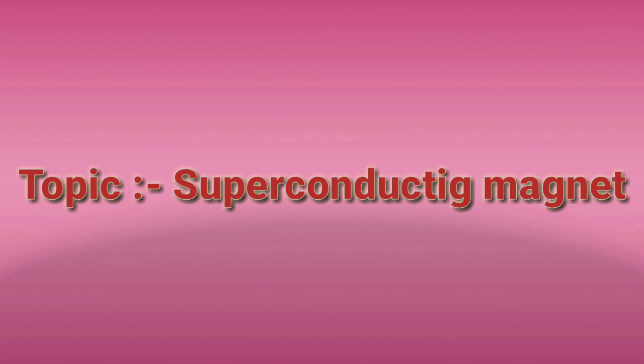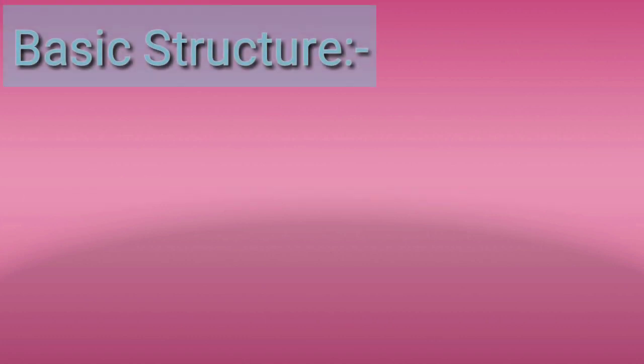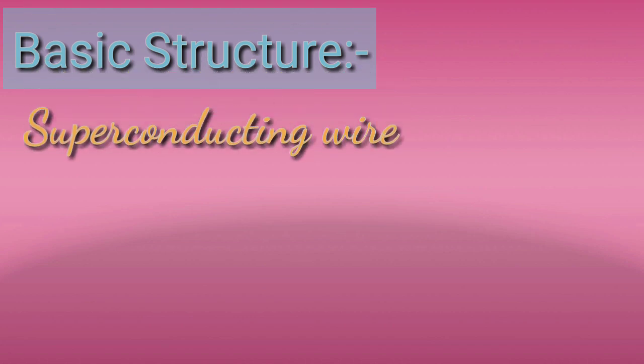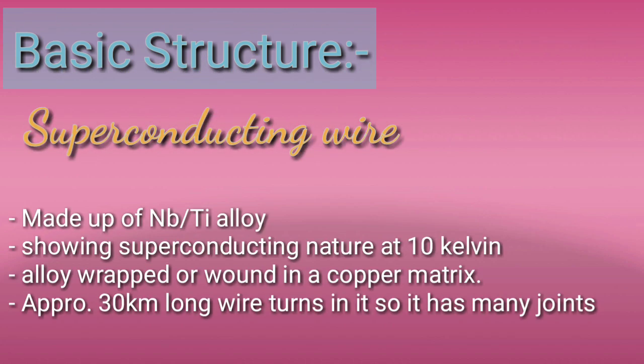Basic structure mein pehli baat kare to, the first point is superconducting wire. Superconducting wire niobium-titanium alloy ki bani hoti hai. Yeh dono elements superconducting nature show karte hain at 10 Kelvin, isliye inhe use kiya gaya hai. This alloy wire is wrapped up in a copper matrix.